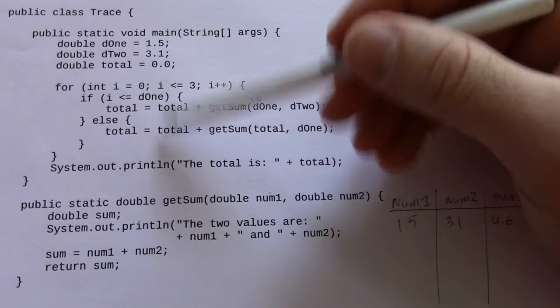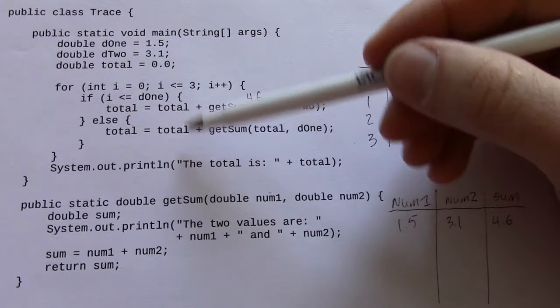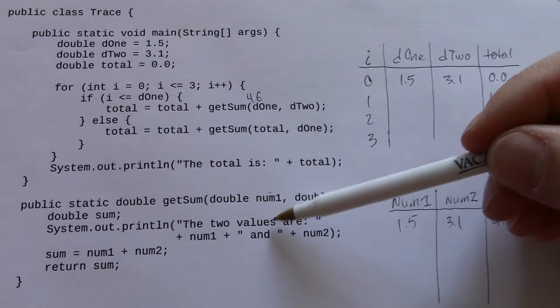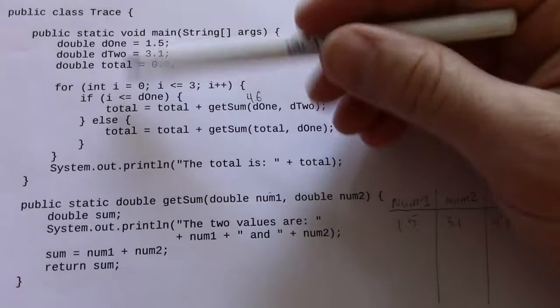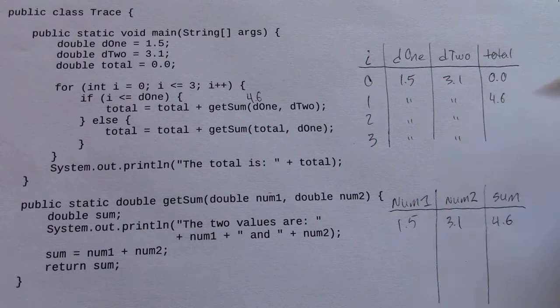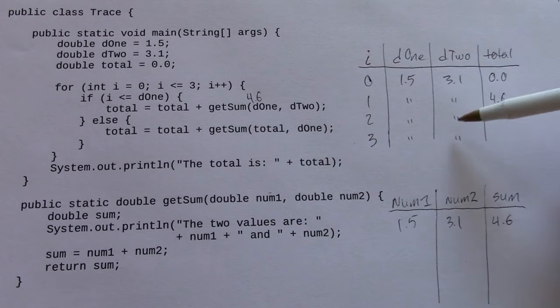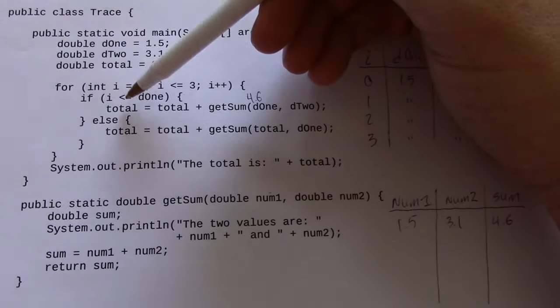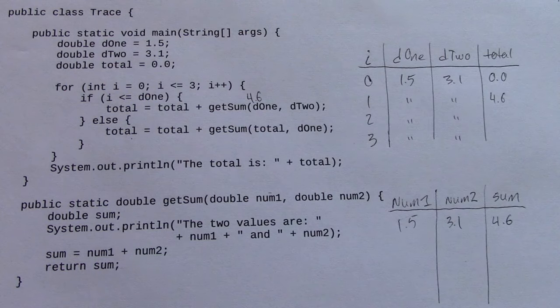Now notice here, just looking at the code, that the values d1 and d2 never change. They're copied into these parameters, but they're never assigned in this method. So I'm just going to draw little ditto marks here to note the fact that those values are constant throughout the execution of this loop. What's really going to happen is, at each step of the loop, the total value is going to change.